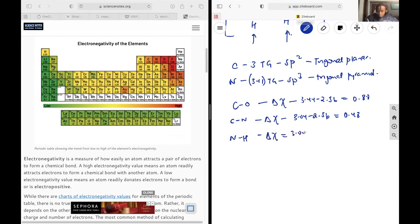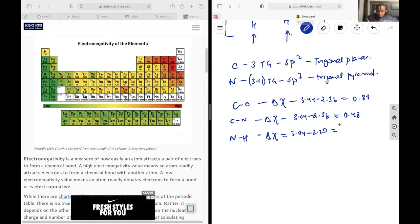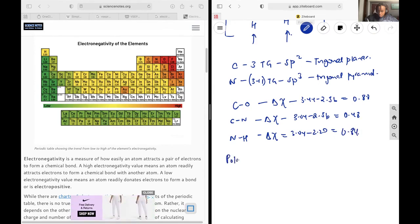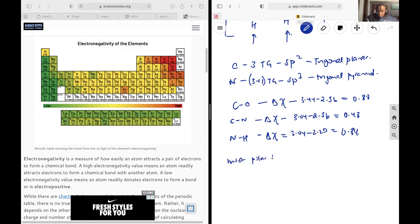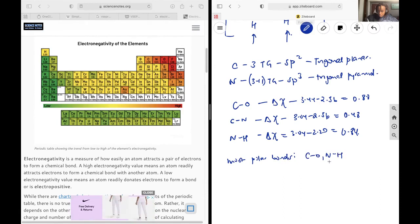Let's check the nitrogen-hydrogen bond. And so that is going to be 3.04 minus 2.20. And that is going to give me 0.84. So the most polar bonds are going to be the CO and the NH bond. The most polar bond overall is going to be the CO bond.